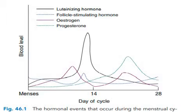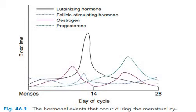Most ovulatory cycles are of a duration of 21 to 34 days. After one week of ovulation — that is day 14 — we are at day 22. The endometrium is prepared for implantation. If fertilization takes place, then the endometrium continues to thicken.